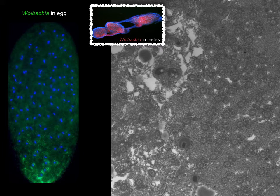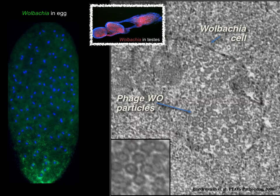In the testes, Wolbachia are visible in electron microscopy images alongside pinwheel structures — cross sections through the tails of sperm. Zooming in, you find Wolbachia. They're not only symbionts of the reproductive tissues; there are also bacteriophages that parasitize Wolbachia. About 60 phage particles with standard structures of icosahedral heads and tails have been documented in a single Wolbachia cell.